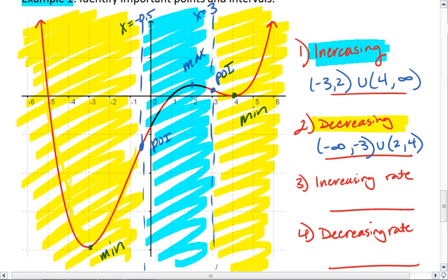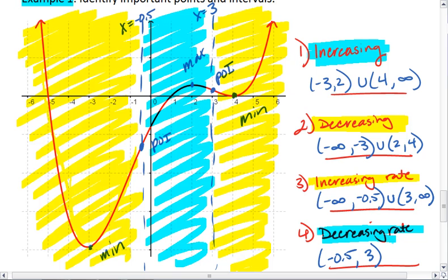So I have an increasing rate where I'm concave up, which is from negative infinity to negative 0.5, and then again from 3 to positive infinity. And I have a decreasing rate or concave down everywhere else, so negative 0.5 to positive 3. And that's my final answer.